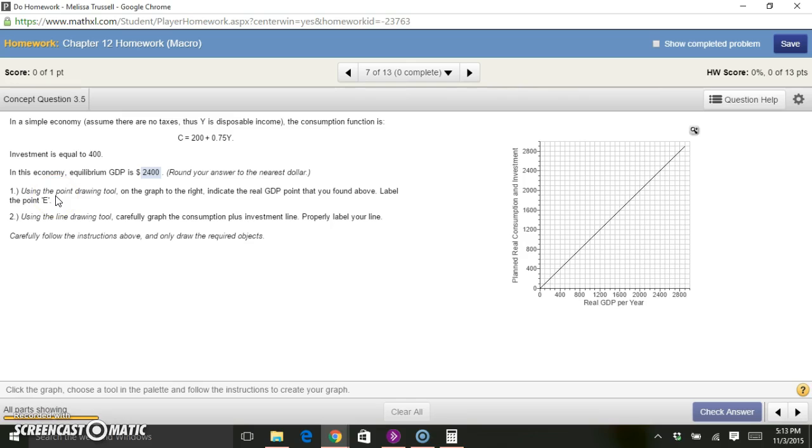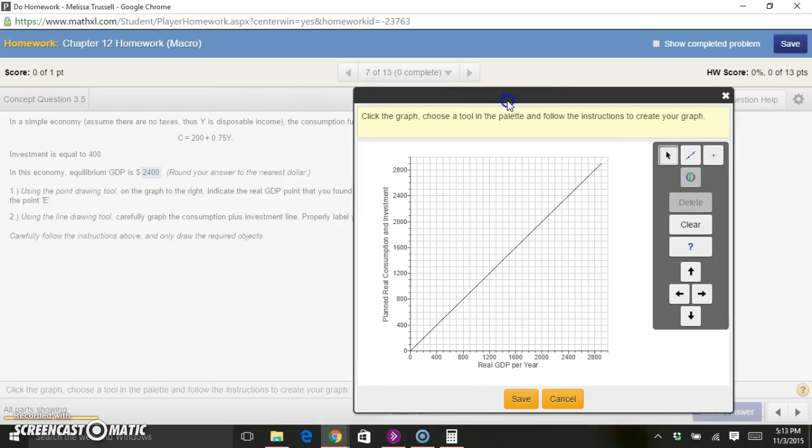Now it wants us to draw these things on the graph. Use the point drawing tool to indicate the real GDP point that you found above and label that point E. Then use the line drawing tool to carefully graph the consumption plus investment line. We want to find the point where GDP equals 2,400. Since it's the equilibrium GDP, consumption plus investment also equals 2,400. We want to go to 2,400 on the horizontal axis as well as 2,400 on the vertical axis. You can watch up here in the right-hand corner to be sure you get to exactly the right point. So 2,400, 2,400 is the point that I label. Label that E.